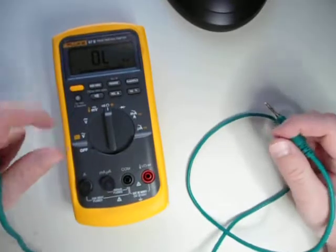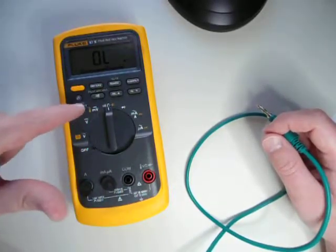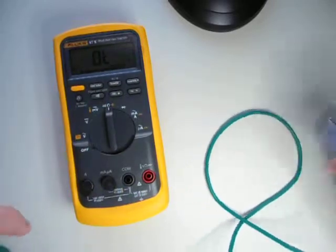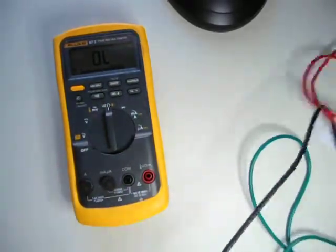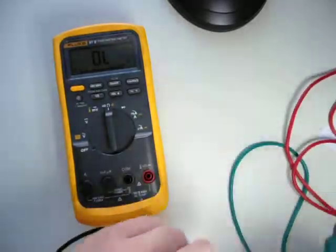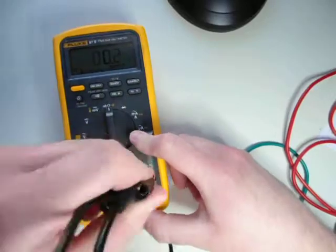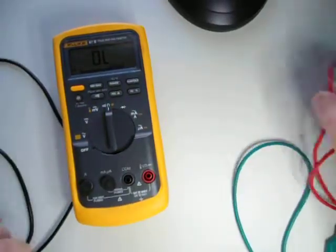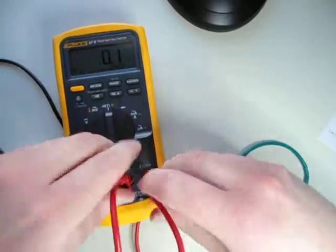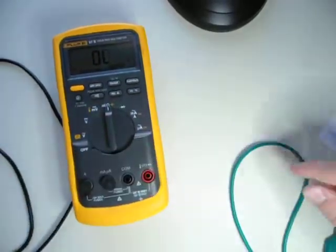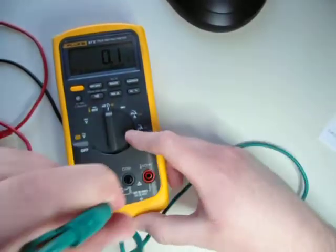So I cracked my pack open and hooked these up to my multimeter in continuity test mode. What I found is that we've got continuity on the black one, continuity on the red one, and continuity on the green one.